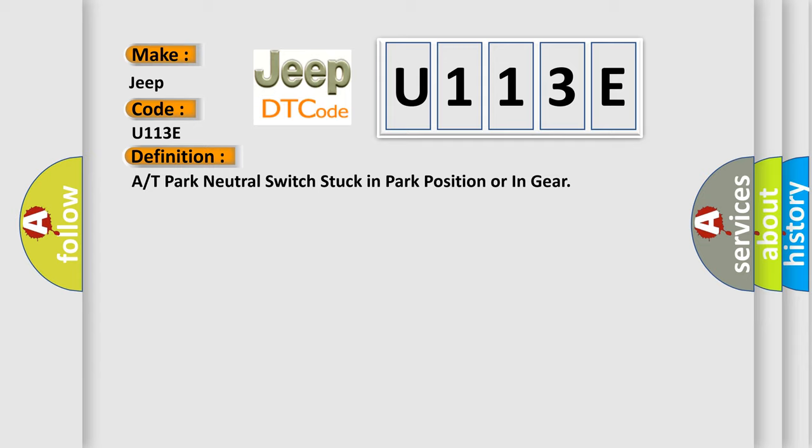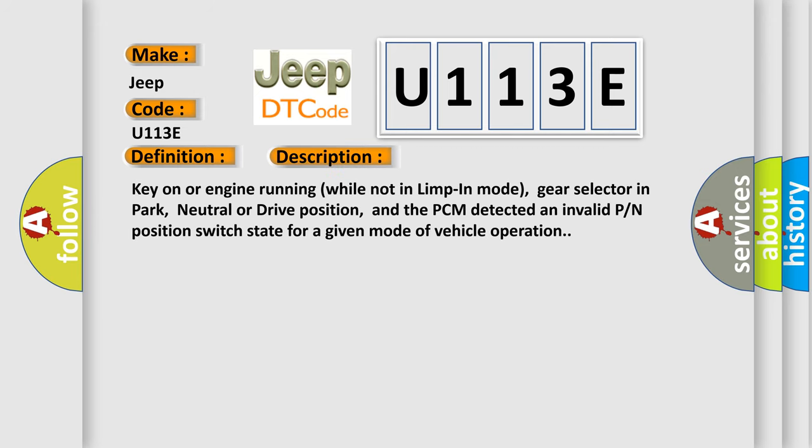And now this is a short description of this DTC code. Key on or engine running while not in limp-in mode, gear selector in park, neutral or drive position, and the PCM detected an invalid P-N position switch state for a given mode of vehicle operation.